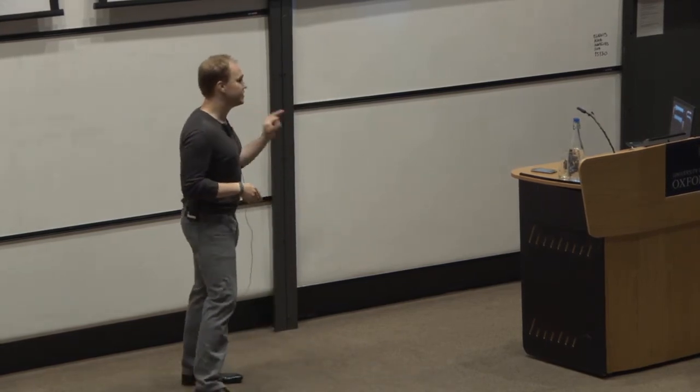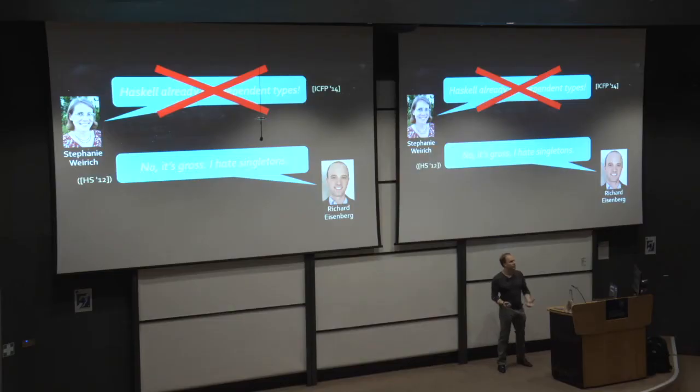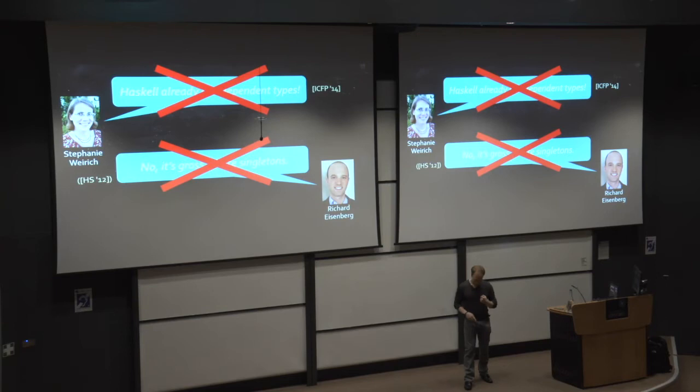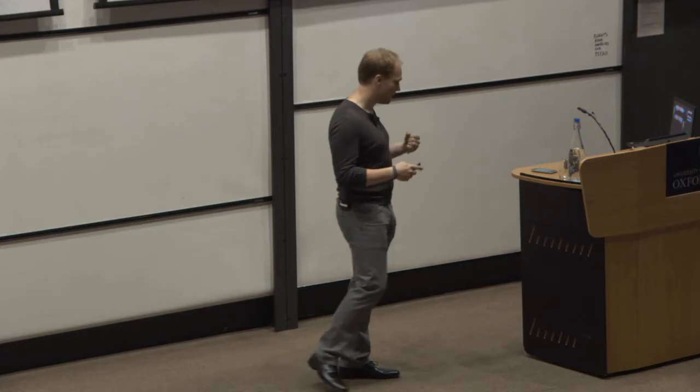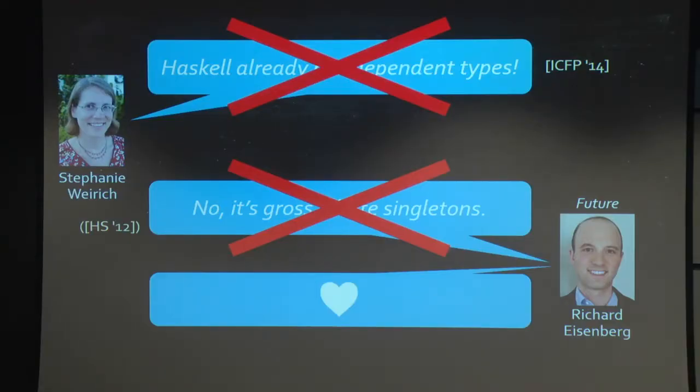So in the following, I'd like to disagree with Stephanie. I don't think we already have dependent types in Haskell. You could argue that maybe we have dependent-ish types, as in we have some aspects of dependent types. But I don't think we already have dependent types in Haskell. As for Richard, well, I agree with his statement about the current state of GHC. But in the future, I'd like him to be really proud about the state of the design. I'd like him to be like, yeah, it's great. We have a clean specification. We have full-dependent types, obviously, and...